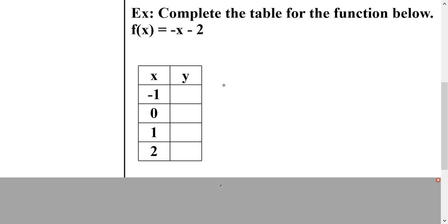So first I'm going to find f(-1). So if I plug in -1 for x, I would have -(-1) - 2. Well, if I have two negatives together, that makes a positive. So then I would have 1 - 2, which would equal -1. And then I put my answer in the y column of my table.